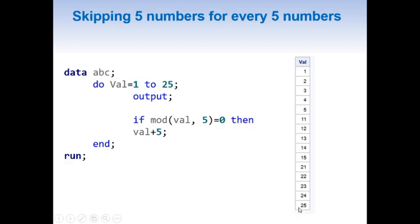The main trick is using the MOD function — whenever the value is divisible by 5, we add 5, and then while incrementing the loop adds one more. In this way we are skipping 5 numbers for every 5 numbers in a DO loop. That's all for this topic. If you liked this, please give it a thumbs up, share, and subscribe. Thank you.